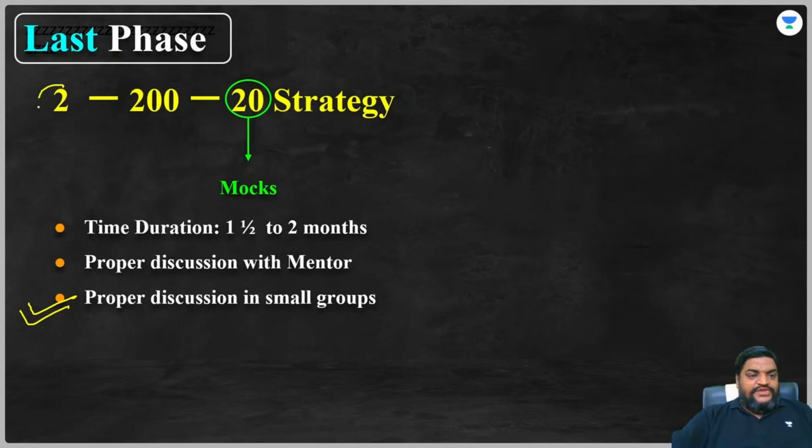So this is 2-200-20 strategy: two months for the first phase wherein you'll have to cover topic-wise concepts, 200 advanced sets, and 20 mocks. The total time taken would be approximately six months, plus minus 15 days.